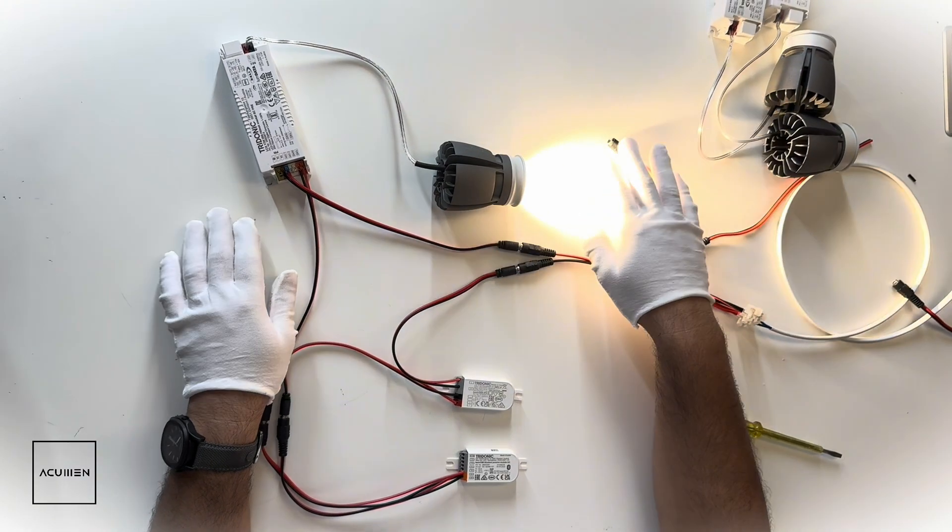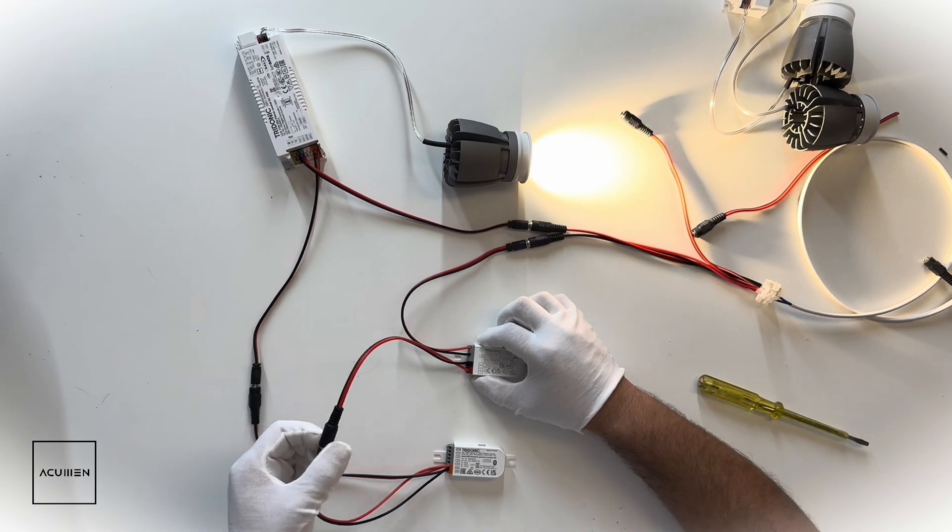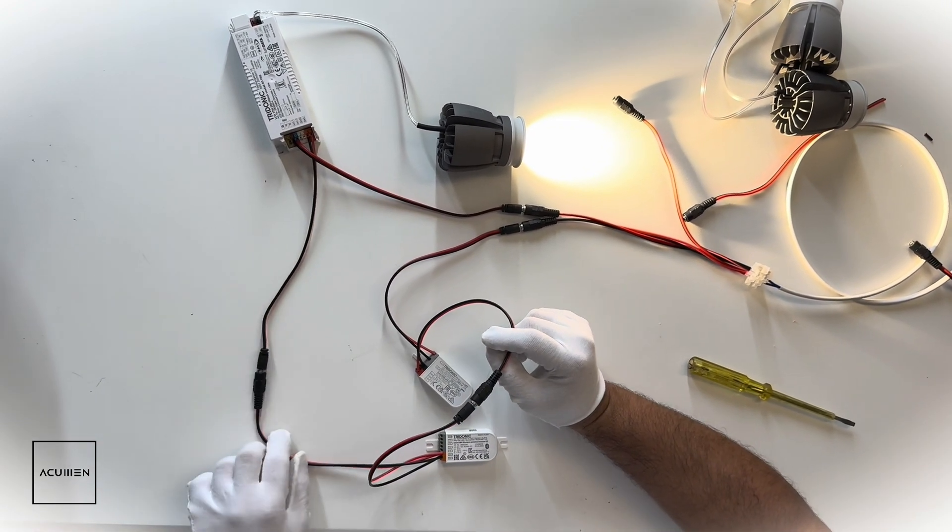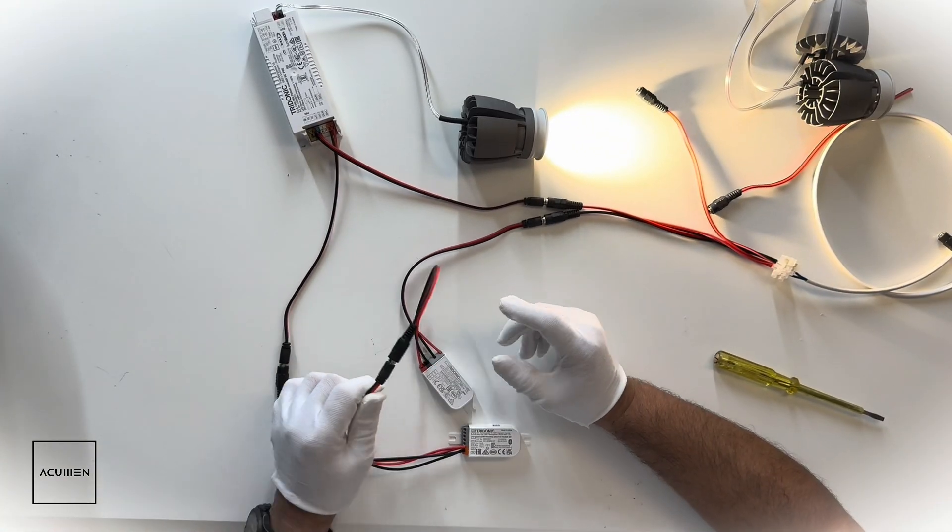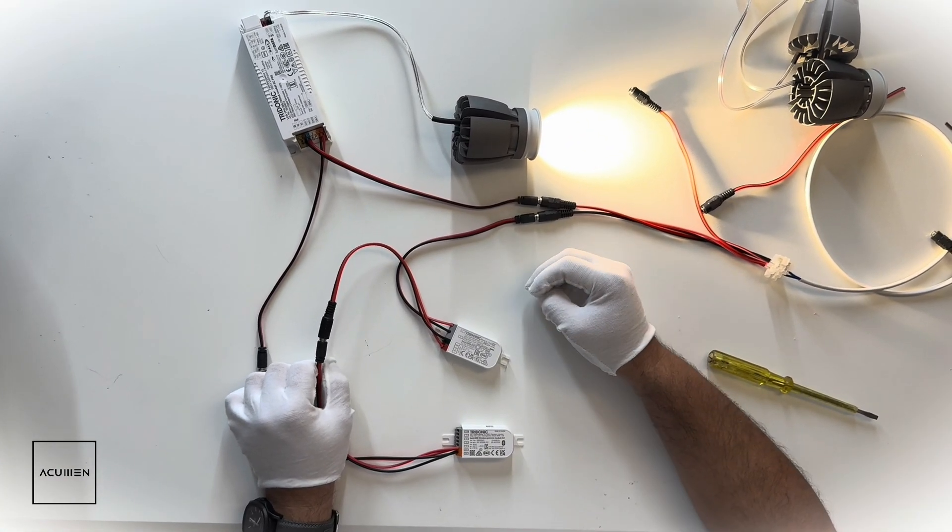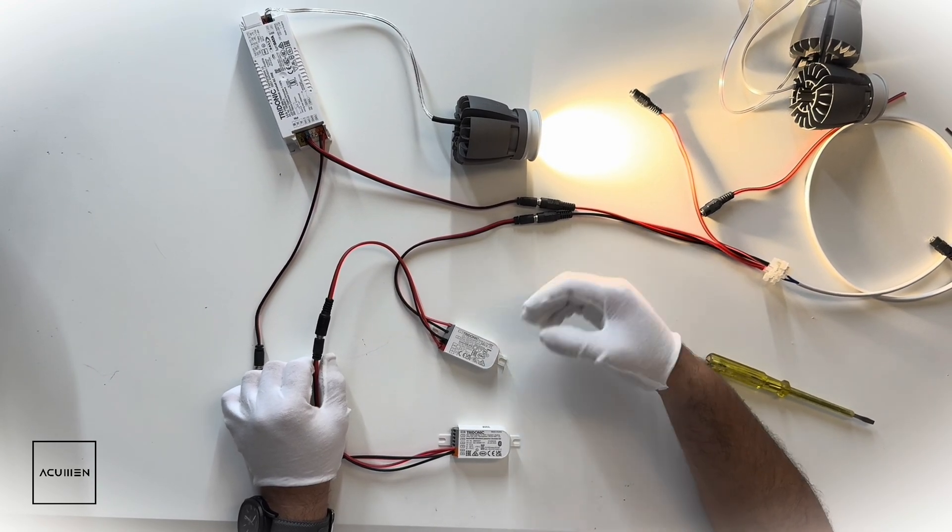As you can see, the light is working so our wiring is perfect. One more point: we can make looping of this signaling. I connected only one driver with the signal, and then with Kasambi application we can make grouping to control the dimming, the brightness, and the switch on/off. We can also make scenes.